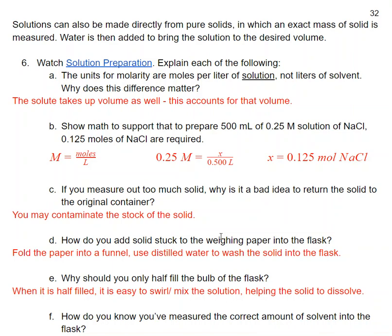So what was originally a thousand milliliters of water suddenly is 999 milliliters of water. We have to account for that possible change in volume. In B, we want to show the math to support that if I want to prepare 500 mL of 0.25 M solution of NaCl, I'm going to need 0.125 moles. Molarity is moles per liter. I know the molarity and I know the liters. I just converted 500 milliliters into liters and I'm solving for moles.